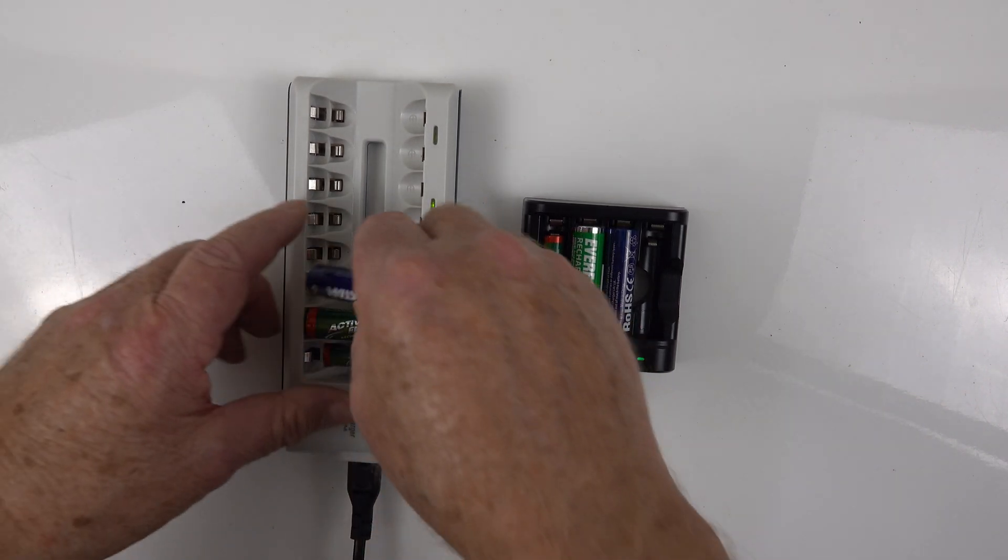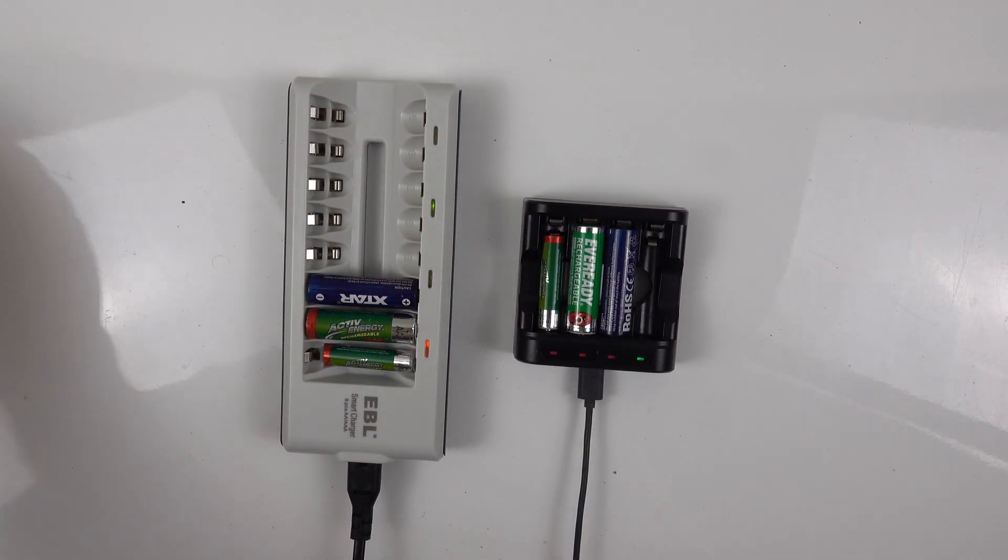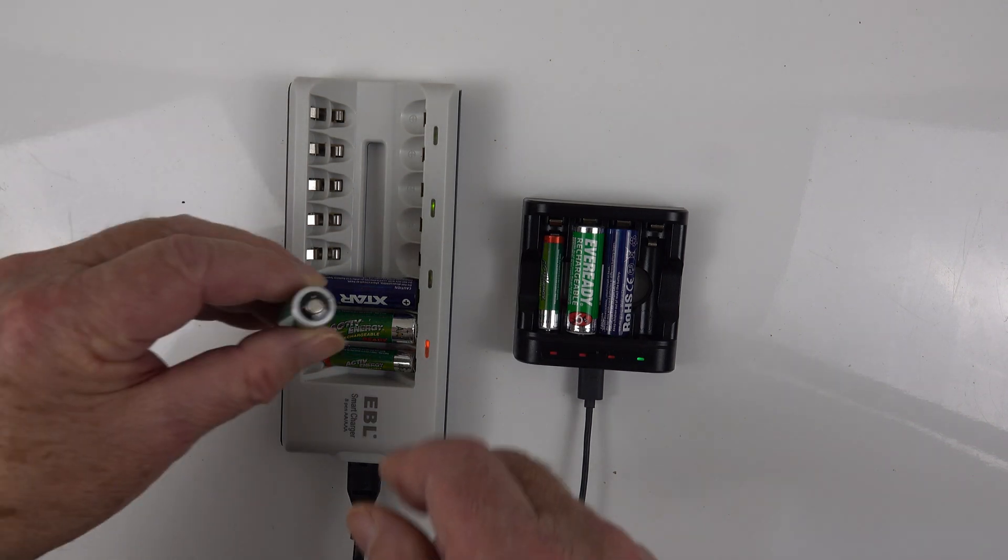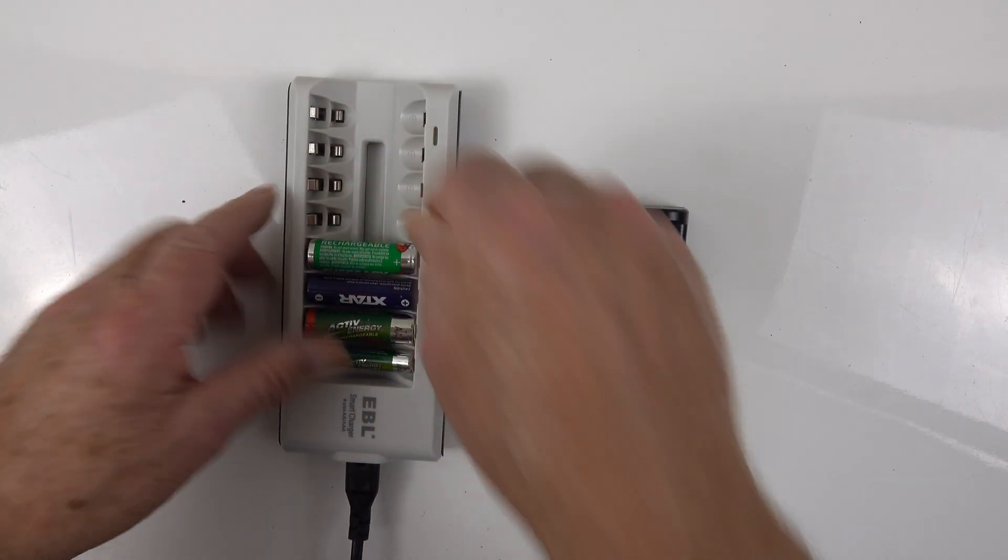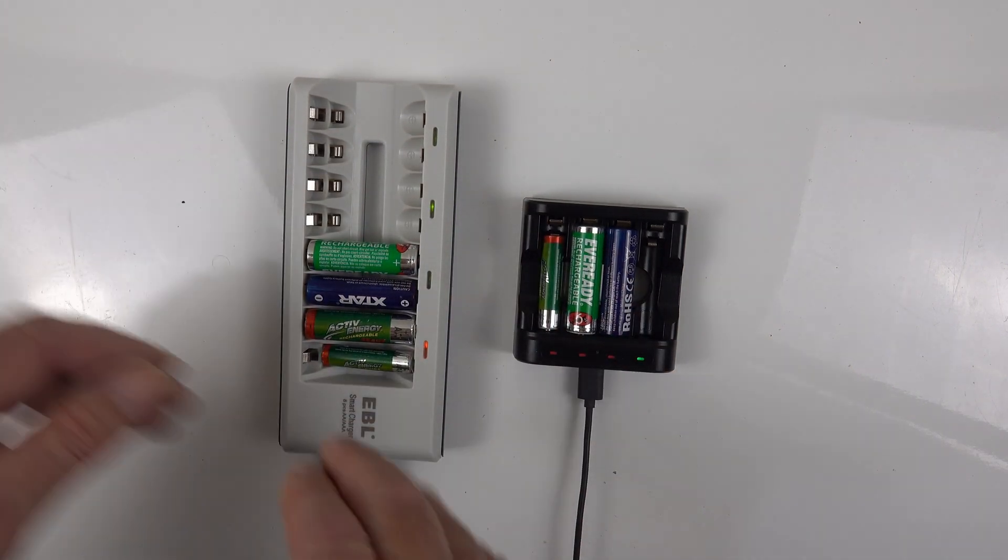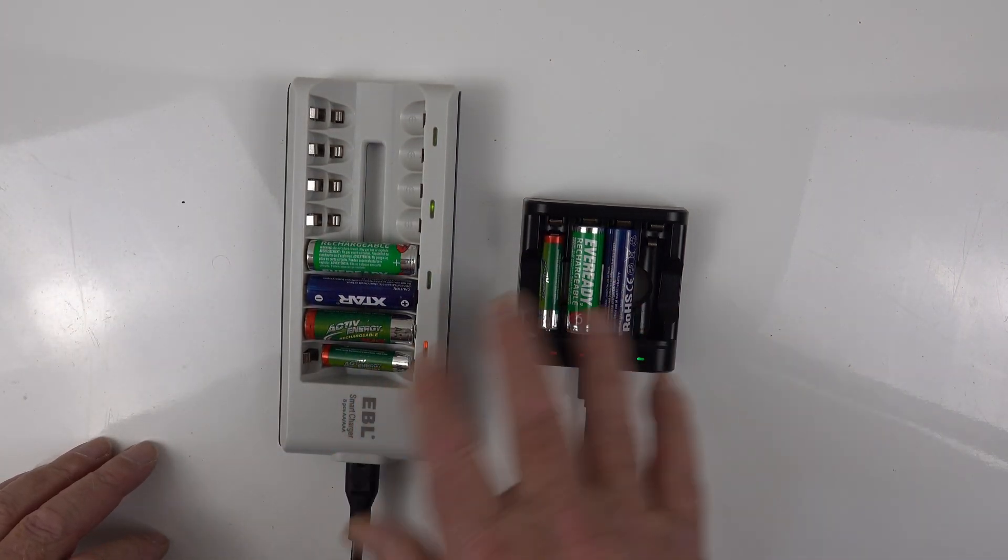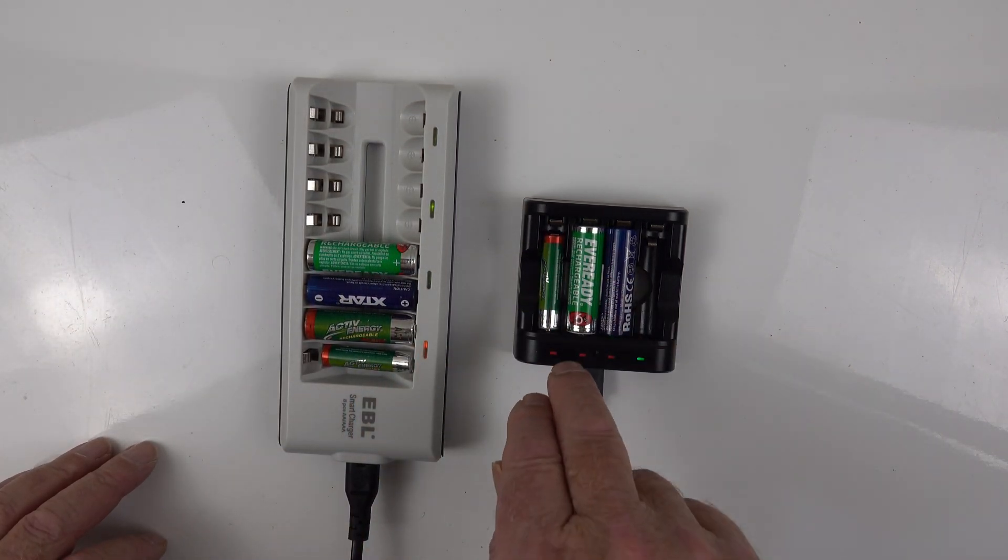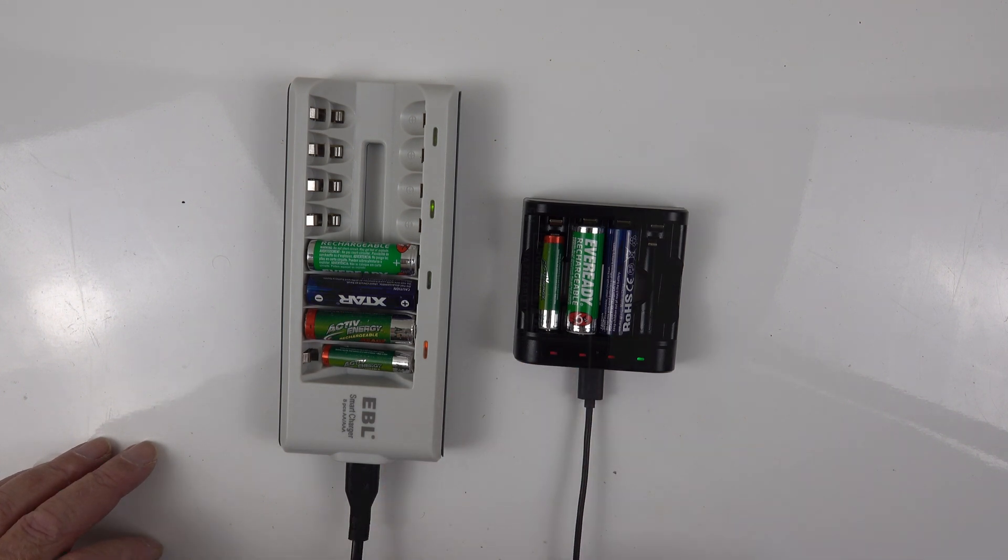Let's put a third one in. Oh no, nothing. Let's put perhaps one of these in beside it and see what happens. Still nothing. So the circuitry between the two of them, huge difference. The L4 is definitely more advanced than the EBL at the moment.